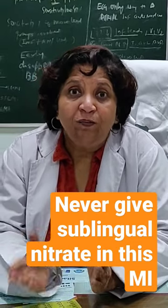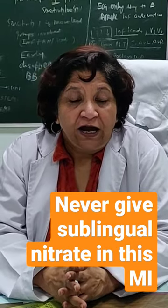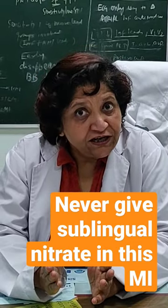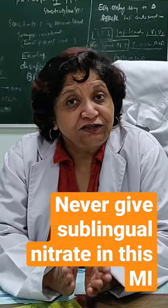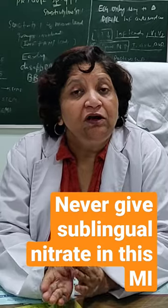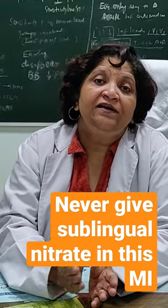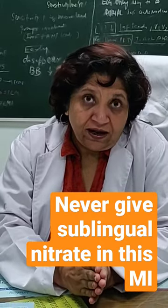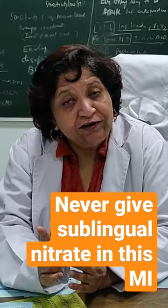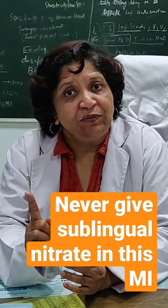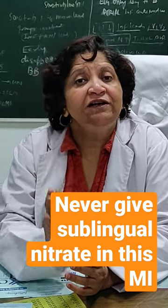Clinically, if the patient has low blood pressure, and on the ECG if there is ST elevation in lead 3 which is more than in lead 2, and there is ST elevation in V1 — because V1 is a lead directly over the right ventricle.